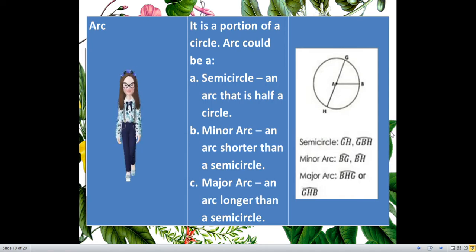Next is major arc. Major arc is an arc longer than a semicircle. Take note that it's longer than a semicircle. Let us go back with our figure. Major arc, you can have BHG, which is now longer. Or, you can counterclockwise GHB. So, we have major arc BHG, or major arc GHB. It will be the same.